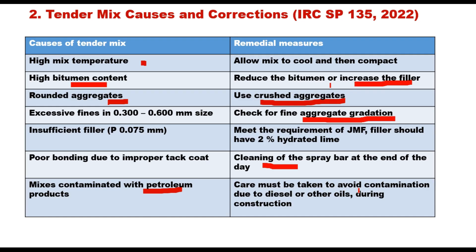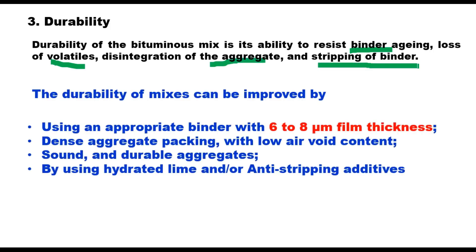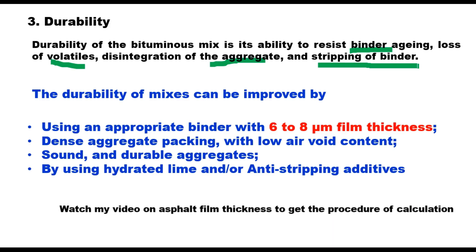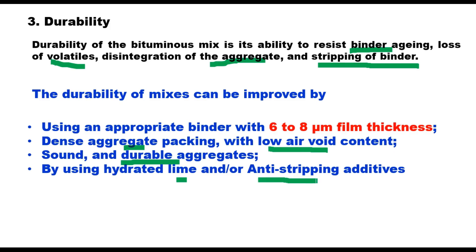Durability of the bituminous mix is its ability to resist binder aging, loss of volatiles, disintegration of aggregates, and stripping of binder. Durability can be improved by using an appropriate binder with 6 to 8 micron film thickness. It can also be improved by use of dense aggregate packing with low air voids, by use of sound and durable aggregates, and also by using hydrated lime or anti-stripping additives in the mixture.